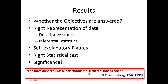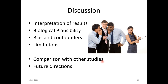Remember: the most dangerous of all falsehoods is a slightly distorted truth. Any falsification or fabrication of results should be identified during a journal article presentation. When looking at the discussion, assess whether the interpretation of results has been done properly, whether the biological plausibility of the hypothesis has been discussed, whether bias and confounders have been mentioned, whether limitations and strengths are addressed, and whether other studies' results have been compared with reasons for differences and similarities.